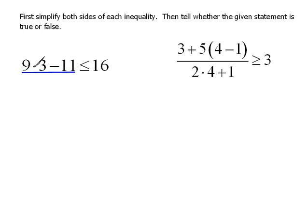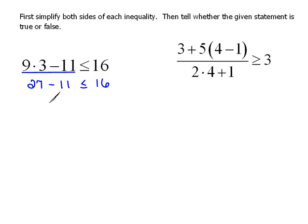Let's look at the left-hand side and simplify. We have multiplication and subtraction as our operations. Multiplication comes before subtraction, so we do 9 times 3, which is 27, and recopy everything else. Now 27 minus 11 — that would be 16.